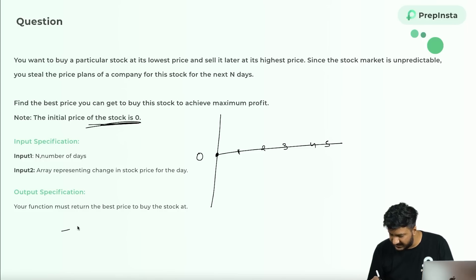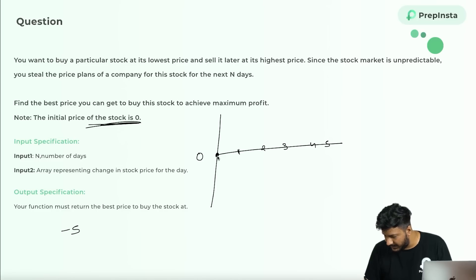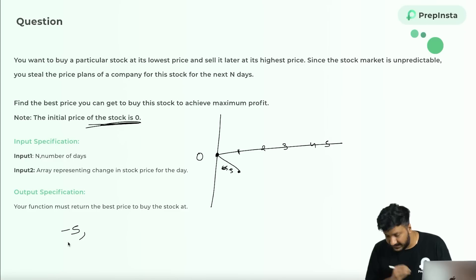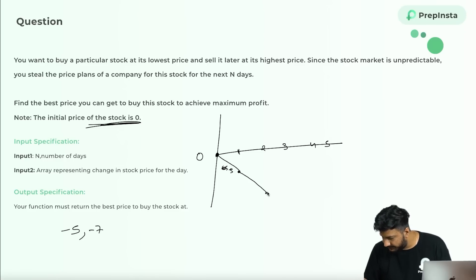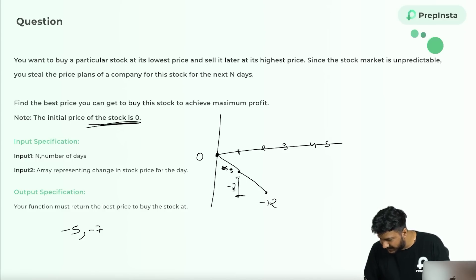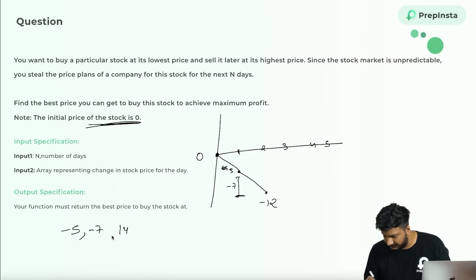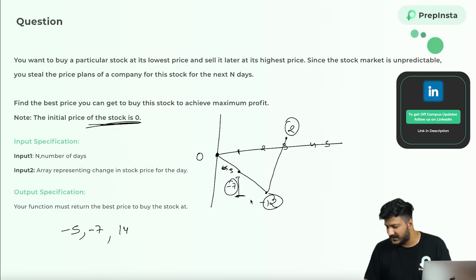For example, if they give you minus five, the change in price from day zero to day one is minus five, so the price becomes minus five. Then if the next value is minus seven, on day two the price would be minus twelve. Then if they give plus fourteen, on day three the stock price would become two. So we first calculate all of these cumulative prices and then based on that determine the answer.